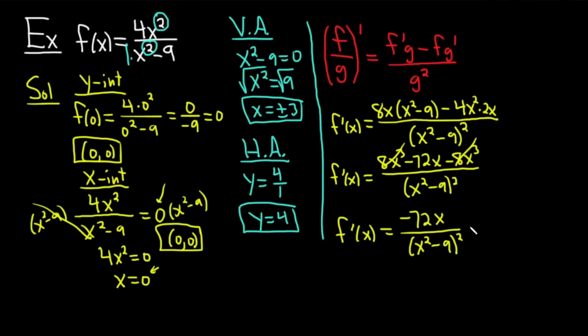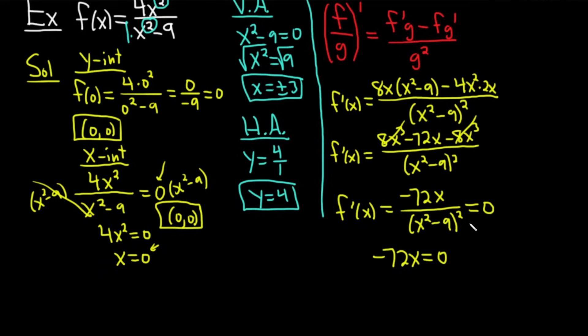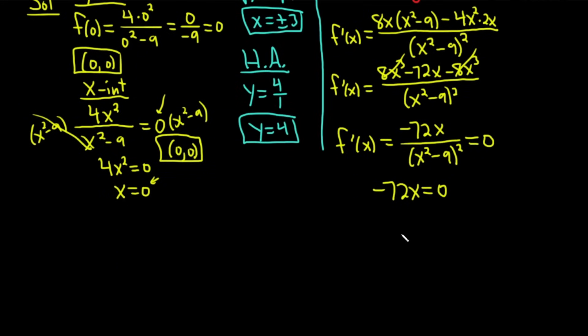Now that we have it, if we set it equal to 0, we can find critical numbers. Again, when you set it equal to 0, you automatically set the numerator equal to 0. You get -72x = 0. That gives us our first and only critical number, x = 0. This is a critical number.